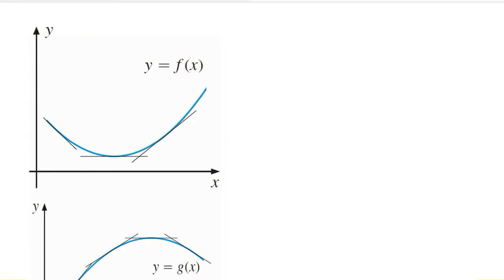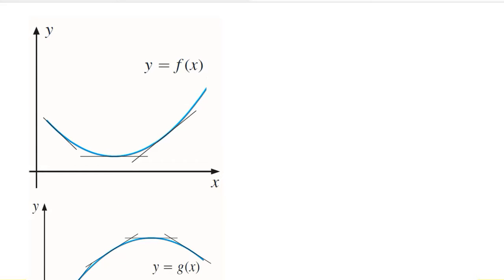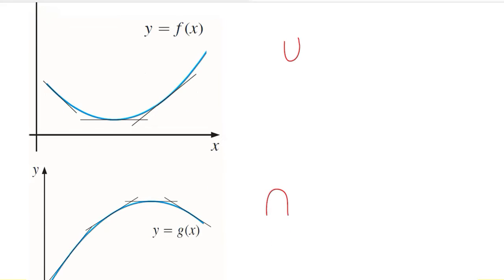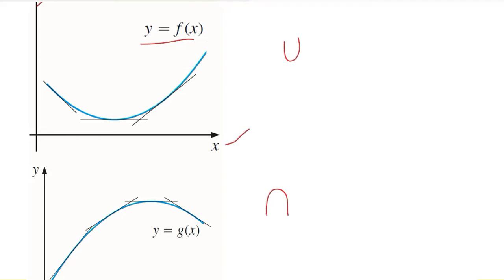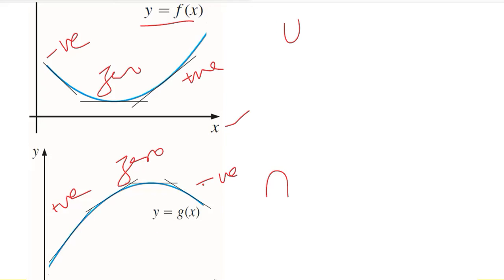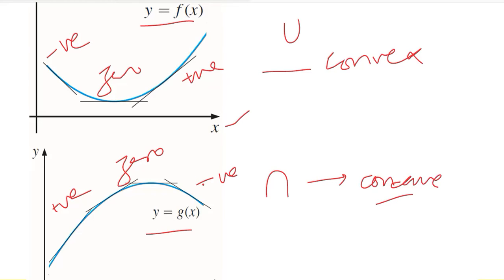Here we have a diagram with a curve which is U-shaped, and another which is an inverted U. Comparing these two diagrams, x is the independent variable and y is the dependent variable, so y is a function of x. The diagram shows a variable slope: in the U-shaped curve the slope is negative, then zero, then positive. The reverse happens in the inverted U — positive, zero, and negative slopes. This is a convex diagram leading to a minimum, and this is a concave diagram leading to a maximum.